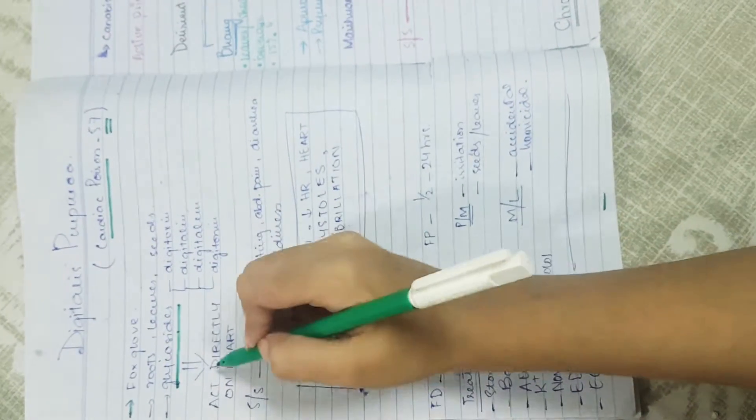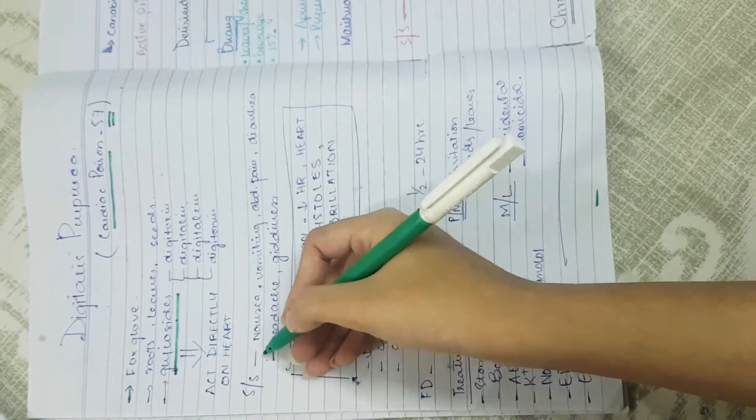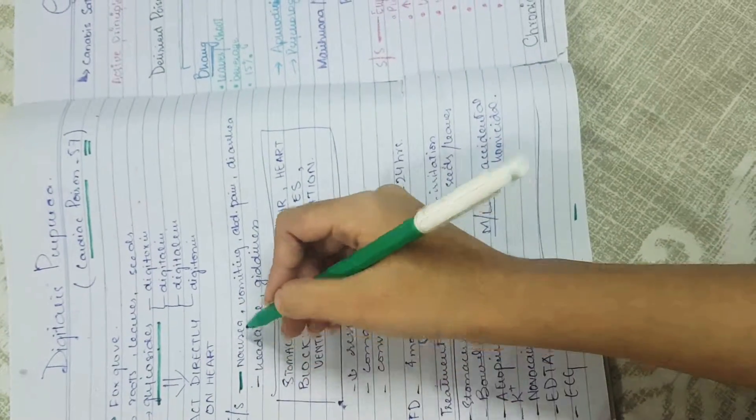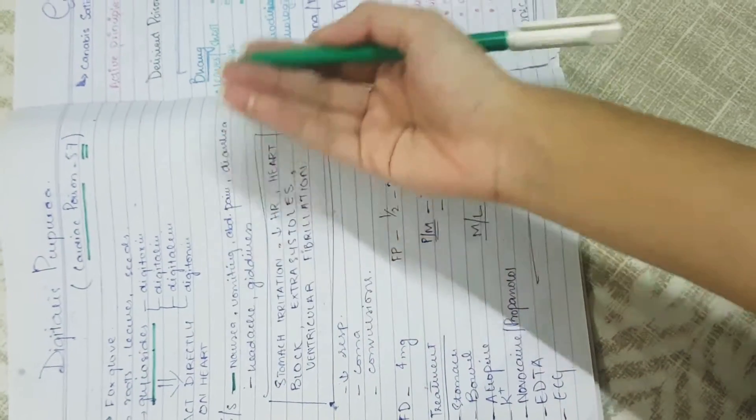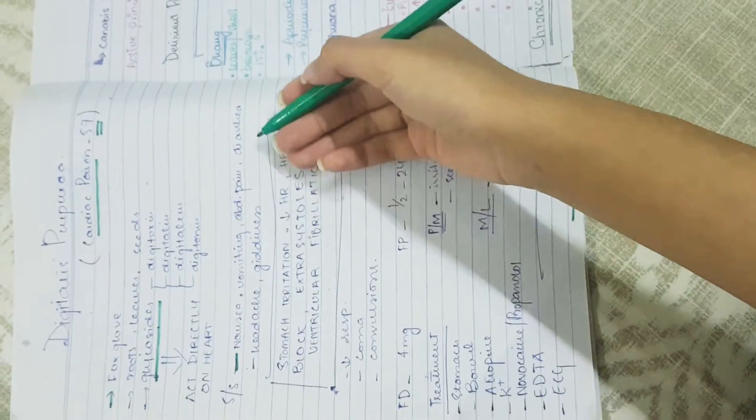These glycosides act directly on the heart. The signs and symptoms are divided into three to four parts. The first group includes general symptoms like nausea, vomiting, abdominal pain, and diarrhea.